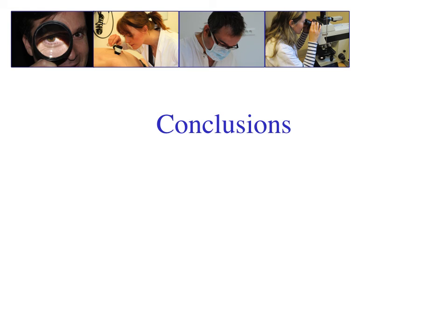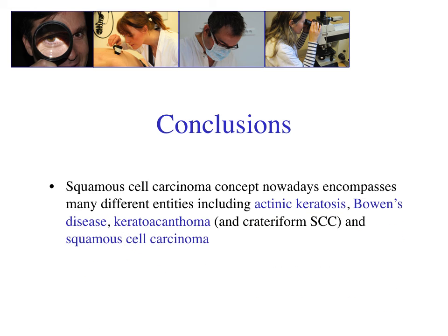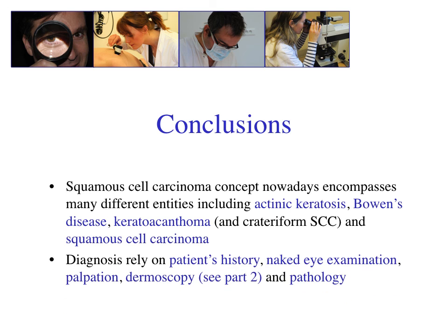For this part, my conclusions are the following. The squamous cell carcinoma concept nowadays encompasses many different entities, including actinic keratosis, Bowen's disease, keratoacanthoma, the crateriform type of squamous cell carcinoma, and indeed the classical type of squamous cell carcinoma. Diagnosis relies on patient's history, naked eye examination, palpation, dermoscopy, and pathology. Thank you very much — hope to see you in the next podcast dedicated to dermoscopy of squamous cell carcinoma.